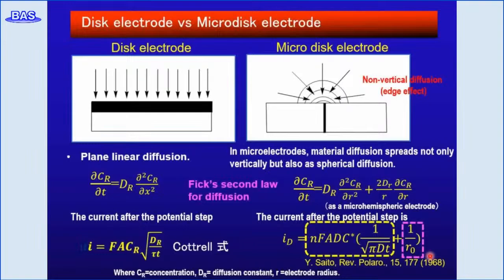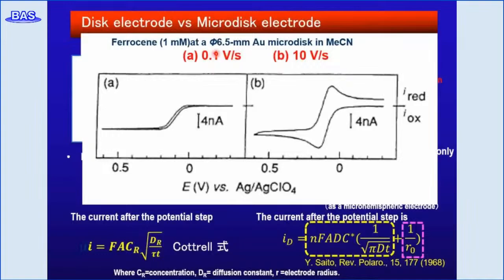When ferrocene in acetonitrile was measured at a 6.5 µm diameter electrode at a slow scan rate of 1 mV per second, a steady-state sigmoidal curve was observed. But at 10 V per second, a peak response is observed even at the microelectrode. This change is explained by the change of mass transfer mode depending on the scan rate.